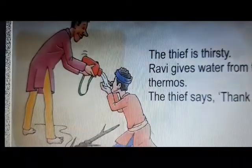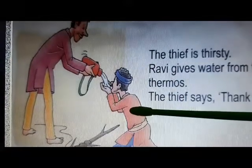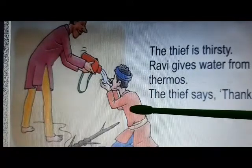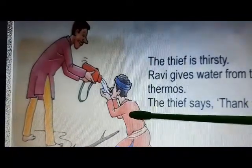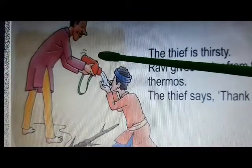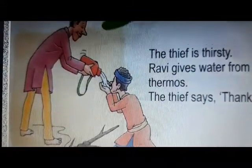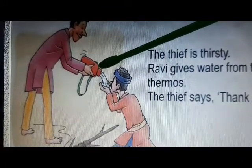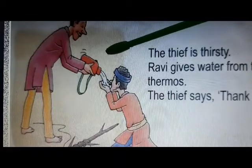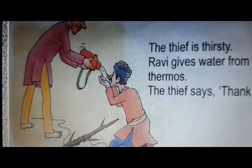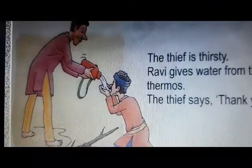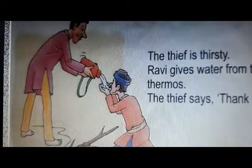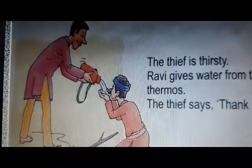Then what happens? The thief feels thirsty — the thief wants to drink water. And then Ravi gives water from the thermos. This is a thermos. When the thief drank the water, the thief says, 'Thank you.' So children, this is all about the story of The Thief and the Thorn.